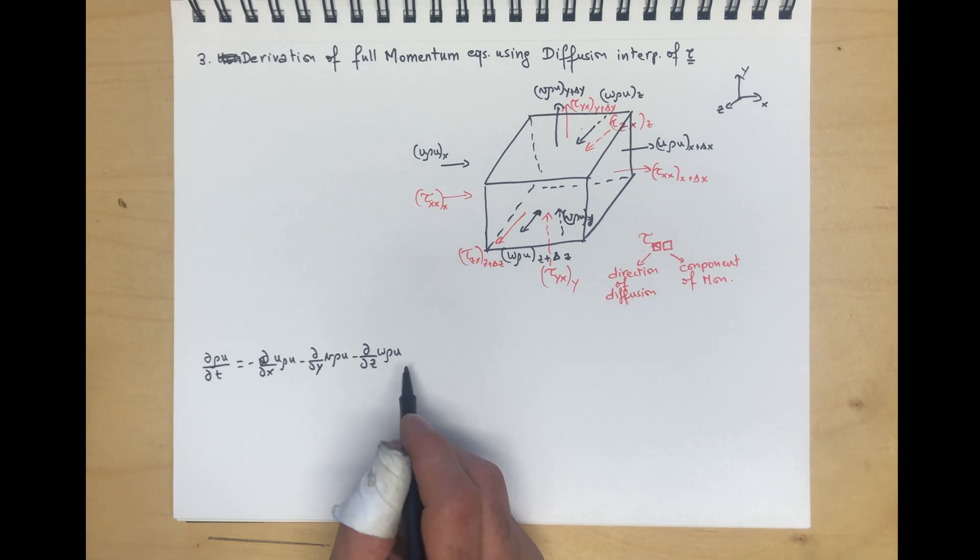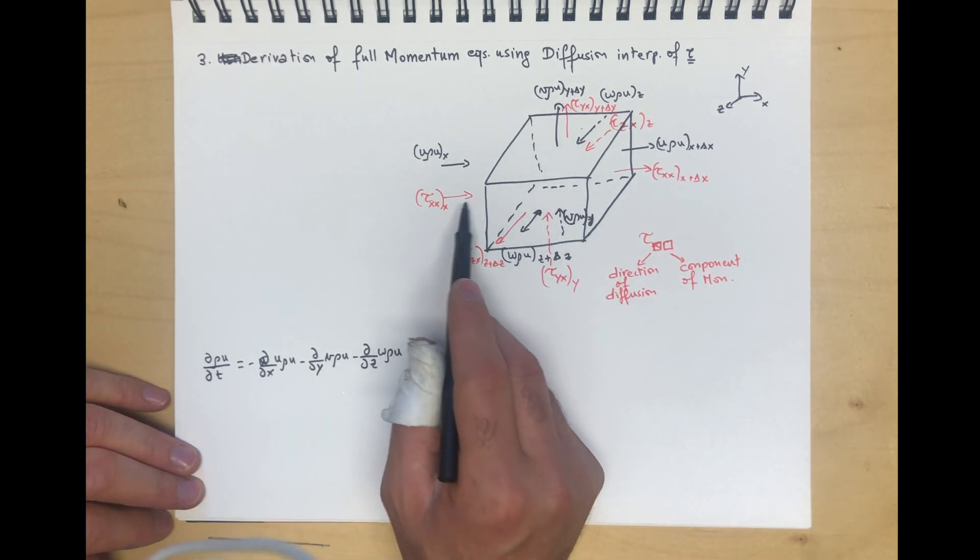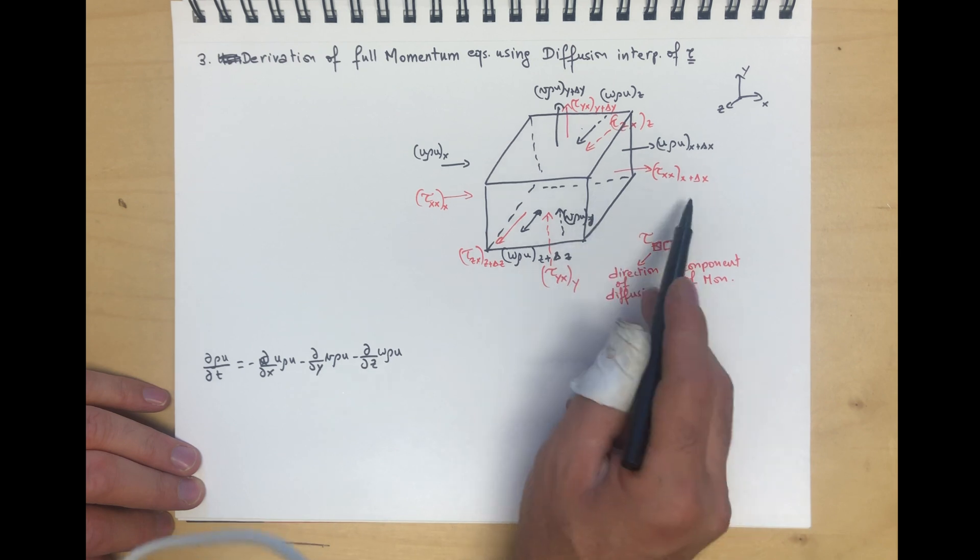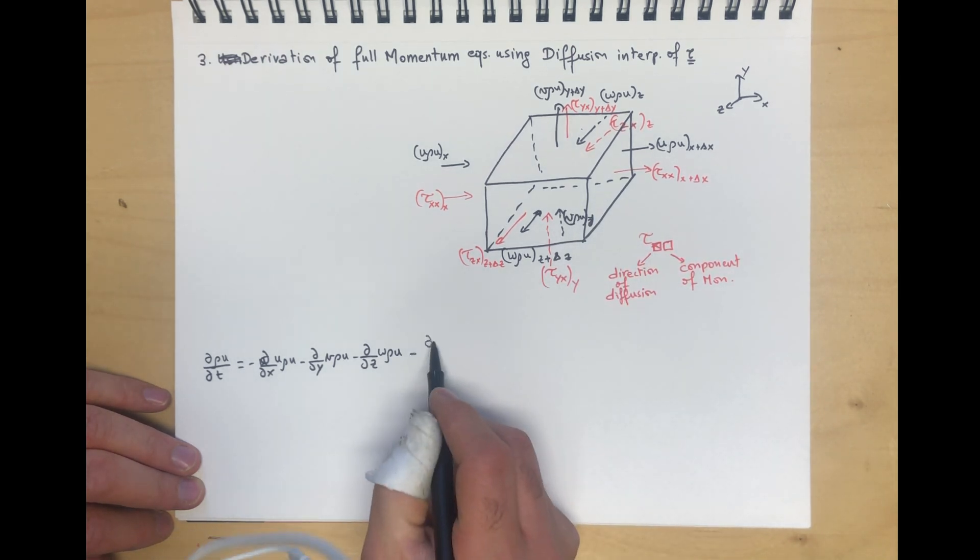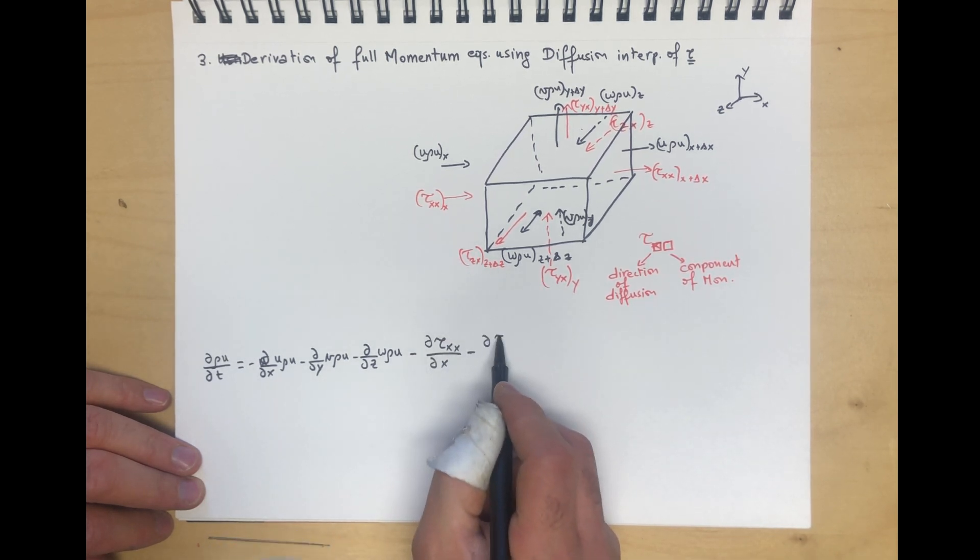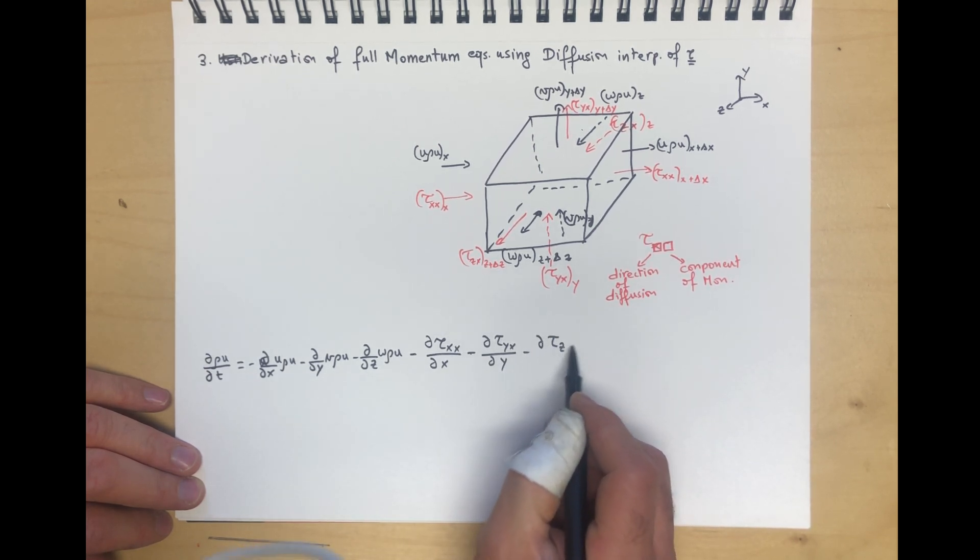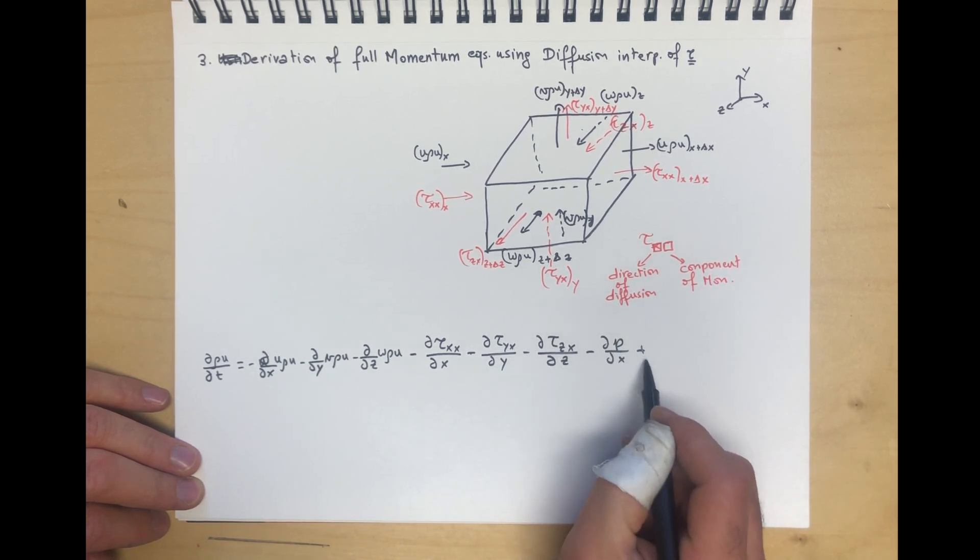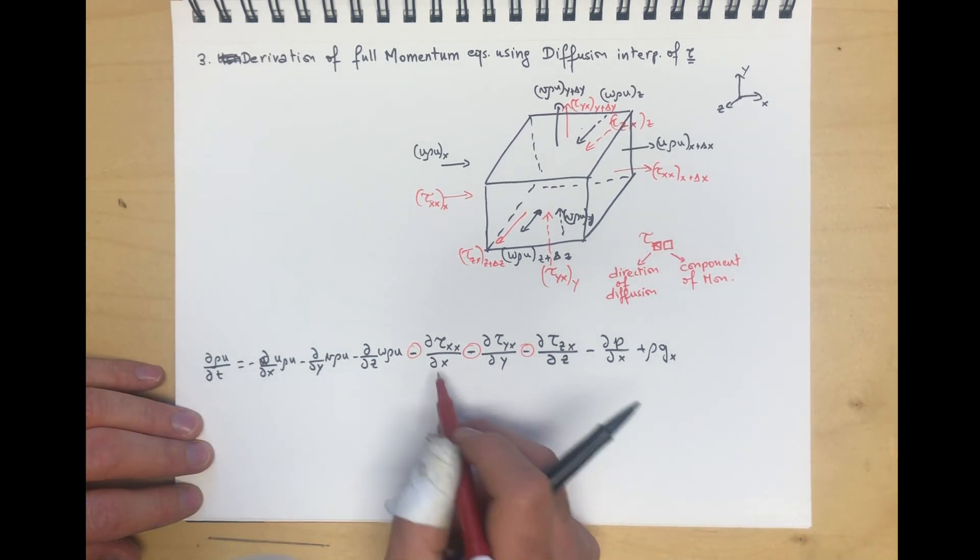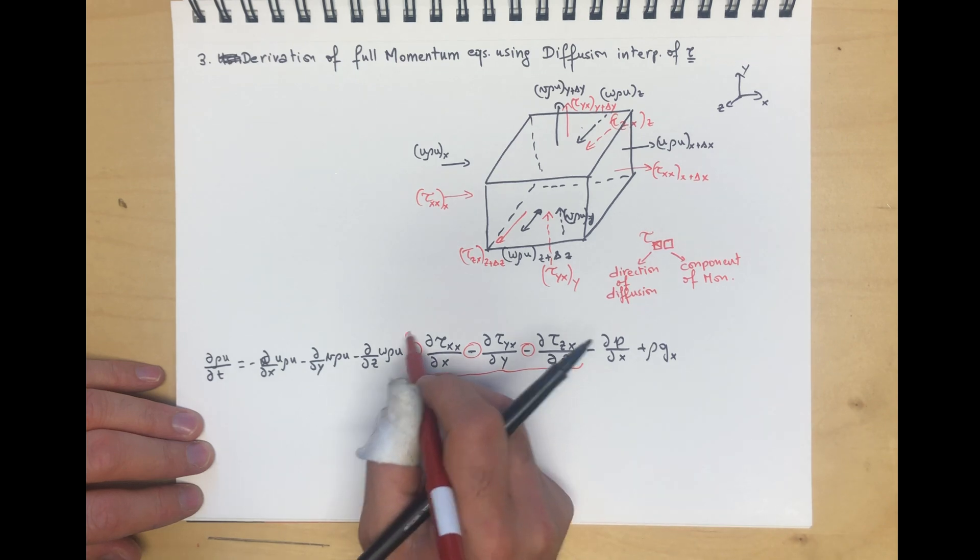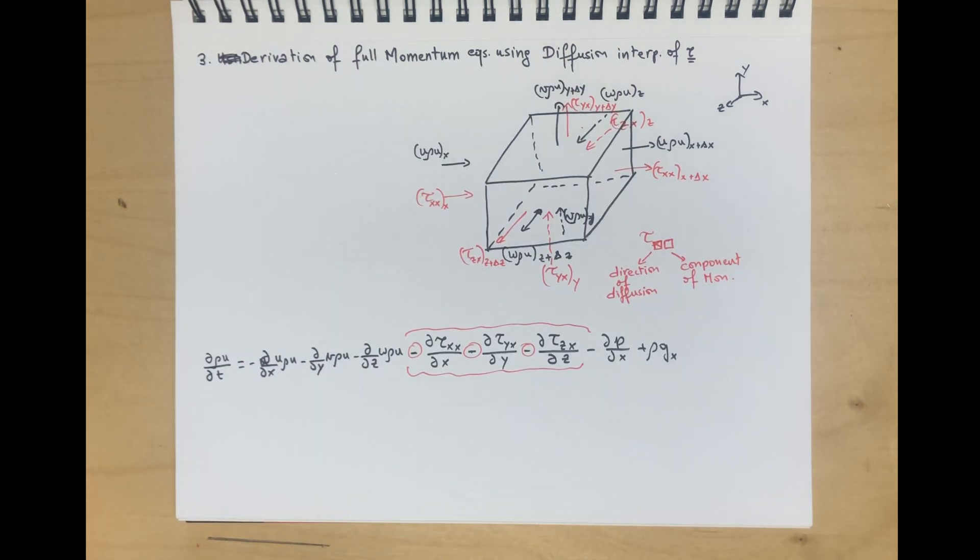For the stress tensor, we have in minus out, giving us a negative sign in front of the derivative. So we get minus dτ_xx/dx minus dτ_yx/dy minus dτ_zx/dz minus dp/dx plus ρg_x. This is a key difference in this derivation versus the other derivations.